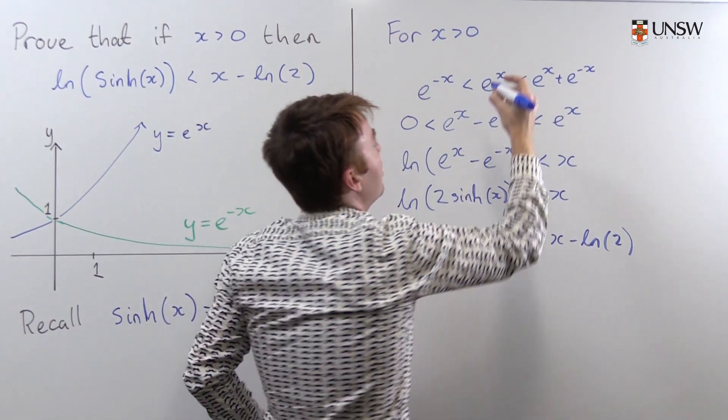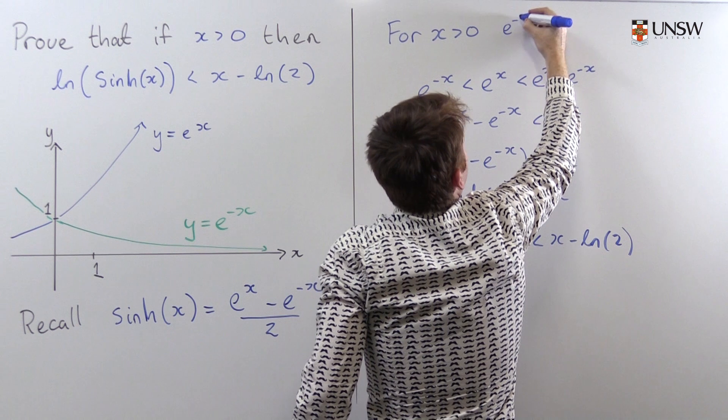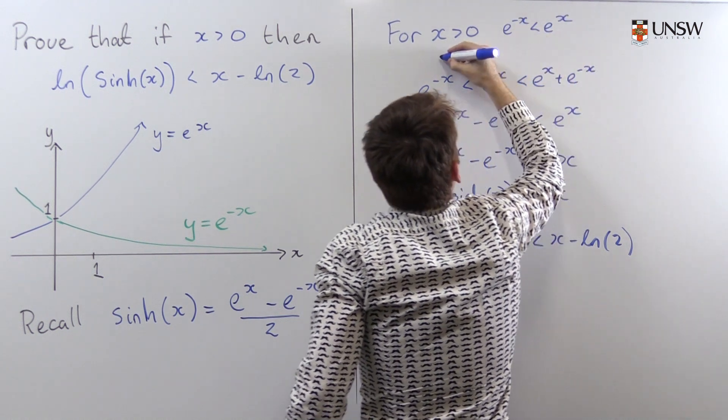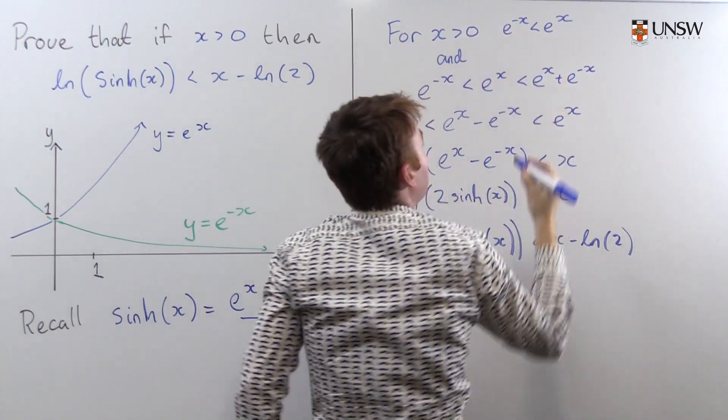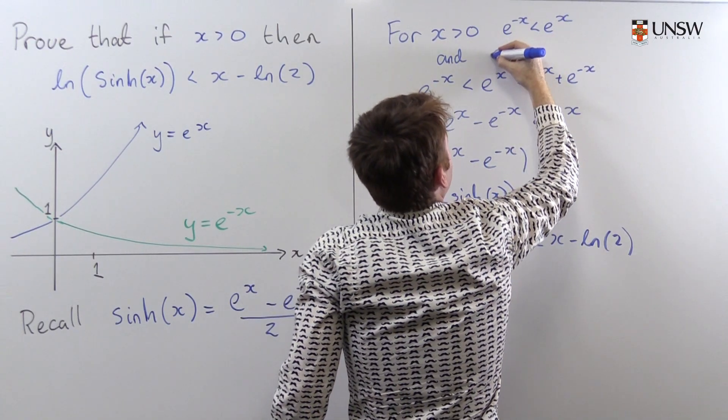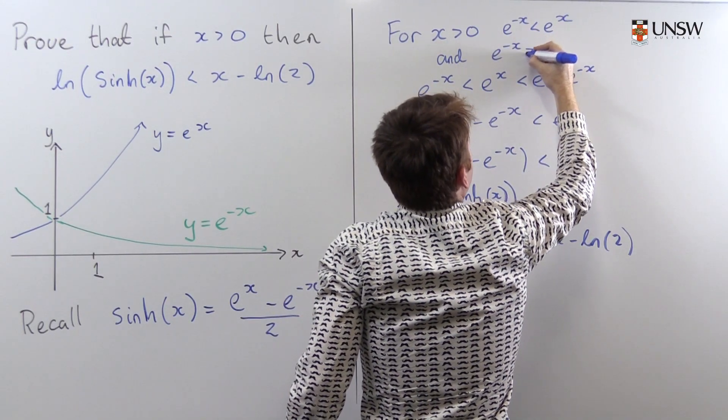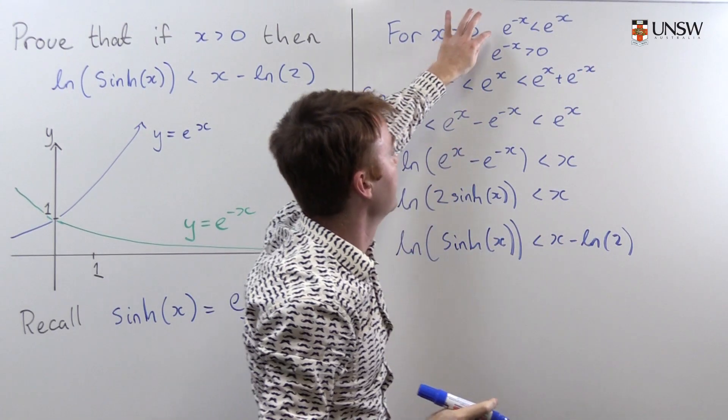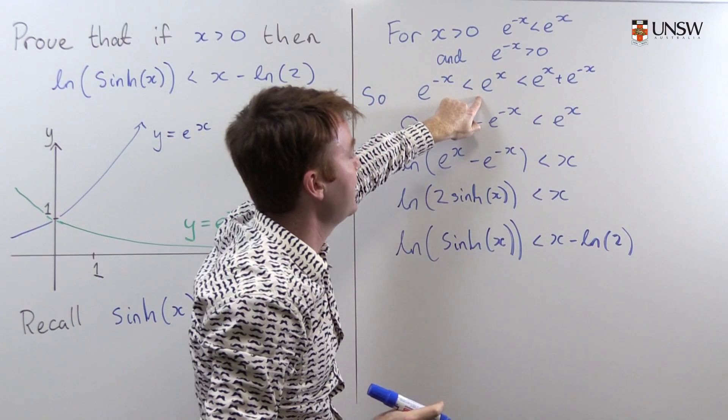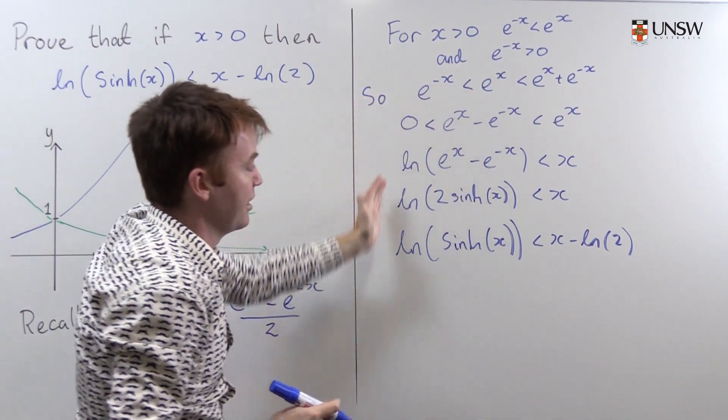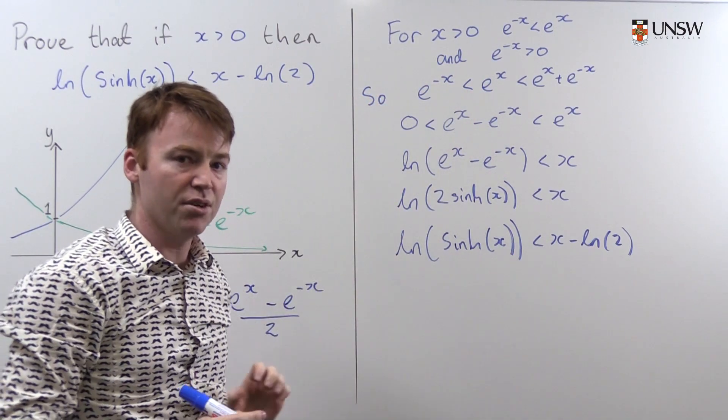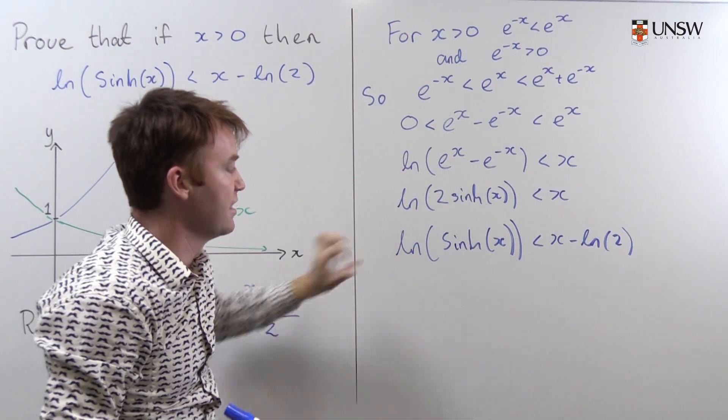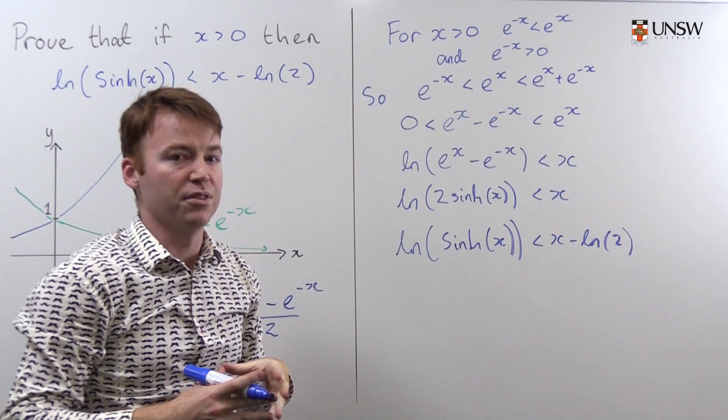For x greater than 0, I know that e to the negative x is going to be less than e to the x. And I also know that e to the negative x is greater than 0. So combining this statement and this statement leads me here and everything else follows nicely. So I've constructed this lovely proof. It's got the right start, it's got the right end and everything in between follows logically.